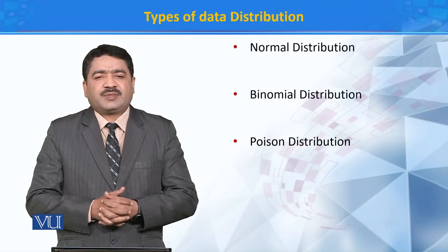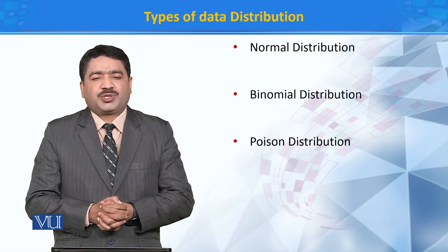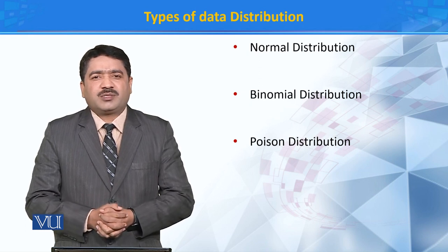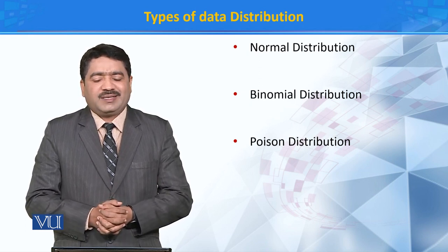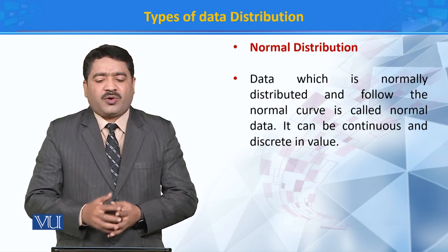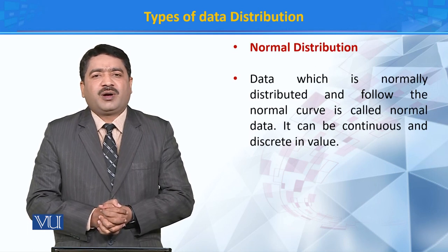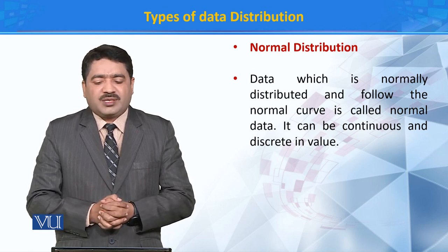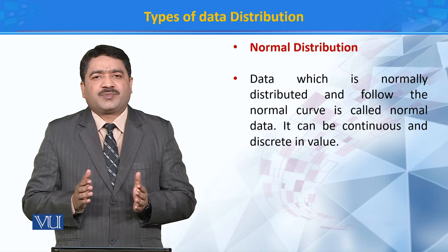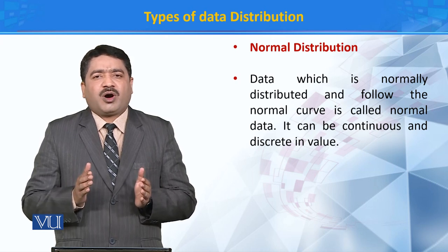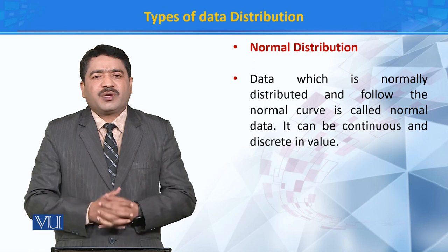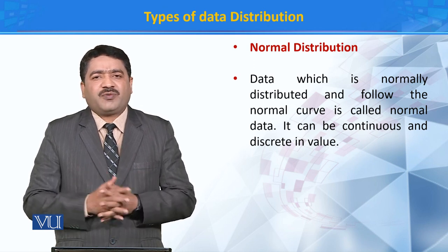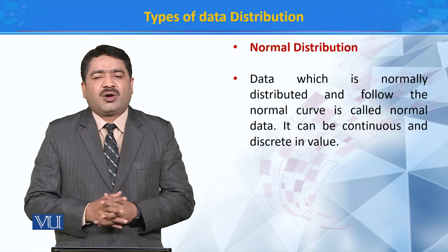There are three types of data distribution: normal distribution, binomial distribution, and Poisson distribution. First of all, what is normal distribution? The data which is normally distributed, or the data which follows a normal bell-shaped curve, is known as normal data, and such type of distribution is known as normal distribution.